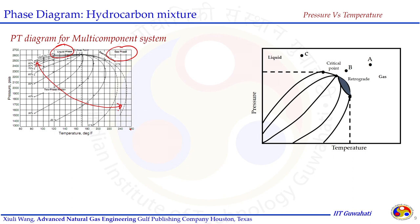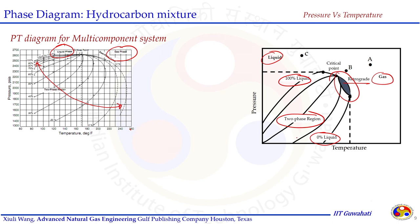We can see more clearly in the diagram: we have liquid on one side, gas on the other, and a shaded region called the retrograde region. The 100% liquid line is the bubble point curve and the zero percent liquid line is the dew point curve. Beyond the dew point curve on the right-hand side, we have only gas phase. Beyond the bubble point curve on the left-hand side, we have only liquid phase. In between, the two-phase region is represented by different liquid loading values as tie lines or quality lines.